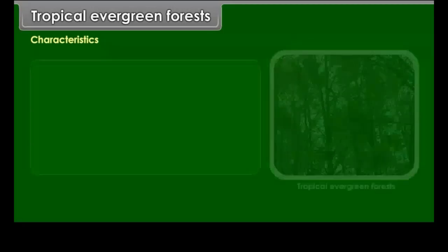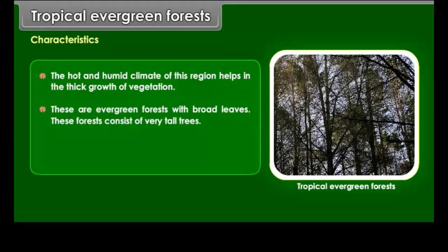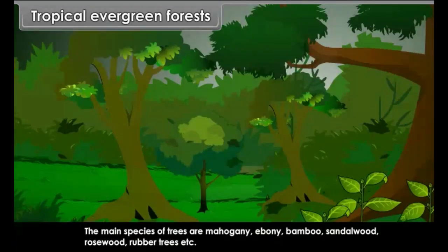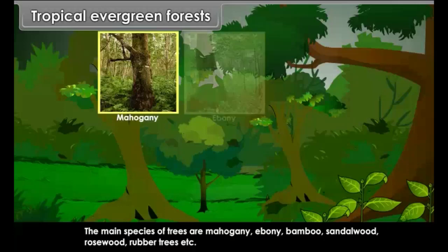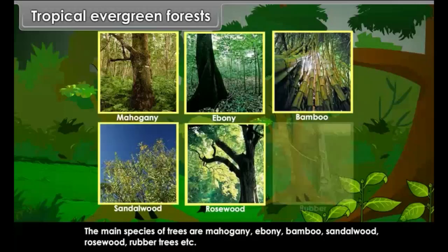Characteristics: The hot and humid climate of this region helps in the thick growth of vegetation. These are evergreen forests with broad leaves consisting of very tall hardwood trees. There are creepers which cling around the trees. The main species of trees are Mahogany, Ebony, Bamboo, Sandalwood, Rosewood and Rubber trees.